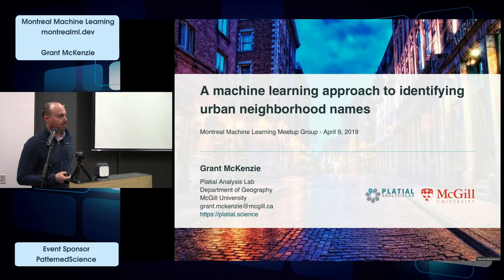My name is Grant McKenzie. I'm from McGill University, in Geoinformatics in the Geography Department at McGill, so a little bit of a different take here today. A lot of my work is in trajectory analysis using recurrent neural networks to look at similar areas of trajectories.